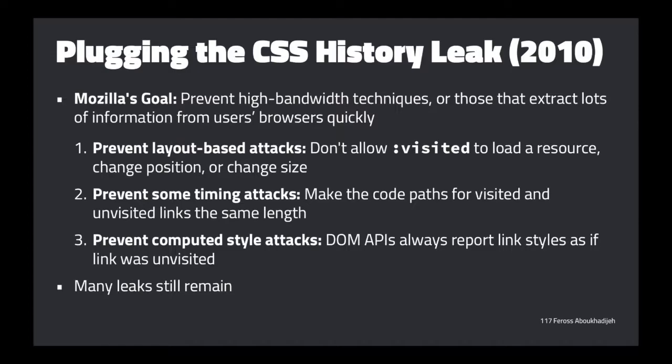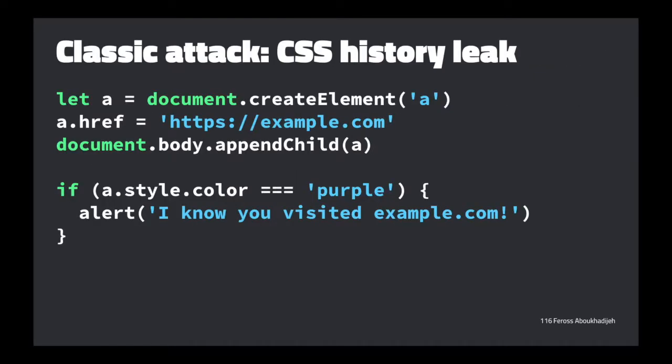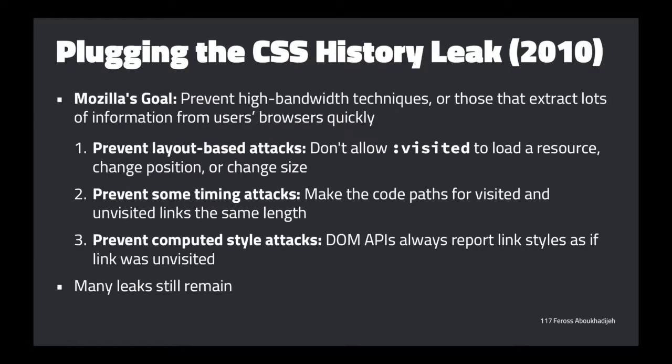They also made internal browser code paths take the same amount of time whether a link is visited or not, to prevent timing attacks. And for the obvious JavaScript workaround — literally just checking the style — they made the browser lie: when you ask what color a link is, it always returns the color of unvisited links, regardless of actual state. It'll act as if unvisited when checked. But this was an incomplete solution with many other leaks remaining.